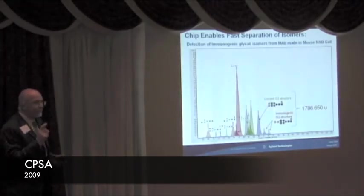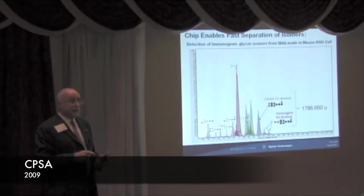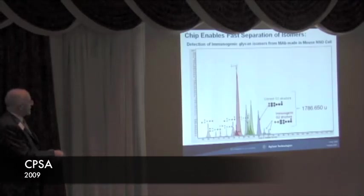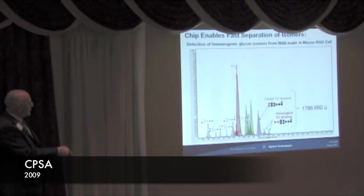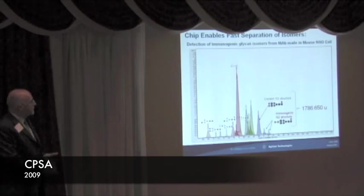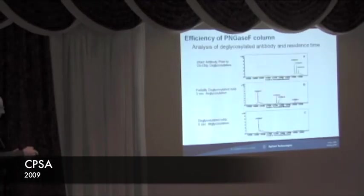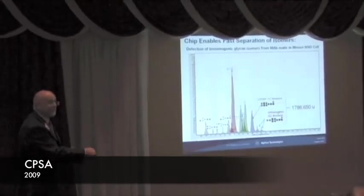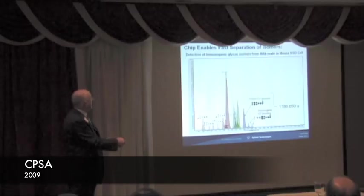One of the really powerful things about the high-resolution separation you get with nanospray LC is that you can separate isomeric structures. This G2 structure here is the correct and normal structure, but this one — a galactose isomer of that particular G2 structure — is immunogenic. You can separate those out in time, and the key point is that they're all exactly the same mass, so you need the separation in order to find them.